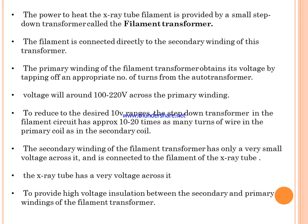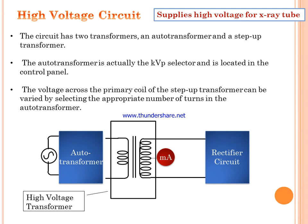The secondary winding of the filament transformer has only a very small voltage across it and is connected to the filament of the X-ray tube. The X-ray tube has a very high voltage across it, so high voltage insulation is provided between the secondary and primary winding of the filament transformer.